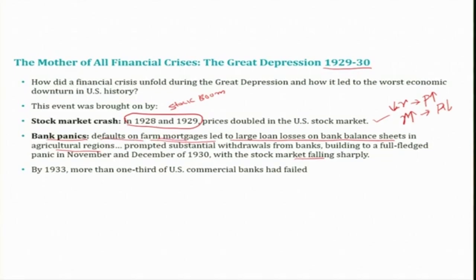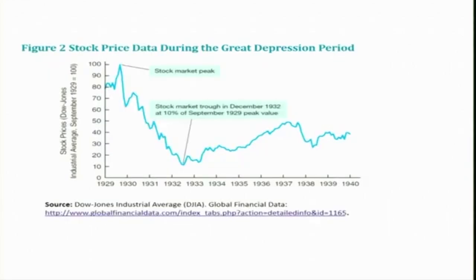By 1933, more than one third of US commercial banks had failed — a full-fledged banking crisis had erupted. You can see the stock price peak in 1929, and then because of tight monetary policy there was a huge, sharp decline in the stock market price. This asset price effect — the stock market crash — then led to the banking crisis, as shown in the diagram discussed in the previous session.